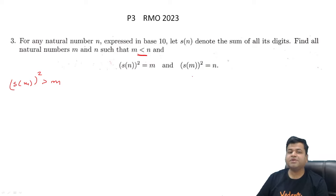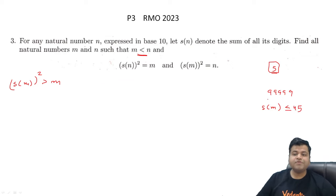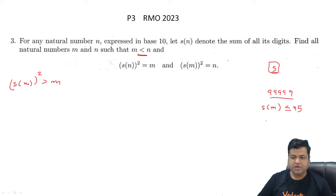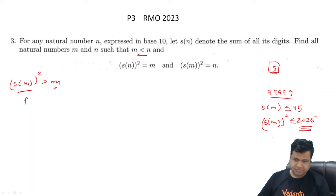Let's try to find that M has at most 5 digits. If M has 5 digits, then S(M) ≤ 45 (maximum digit sum for 5-digit number). So S(M²) ≤ 45² = 2025, which is a 4-digit number. But M is a 5-digit number, and a 4-digit number cannot be greater than a 5-digit number. So this is not possible.